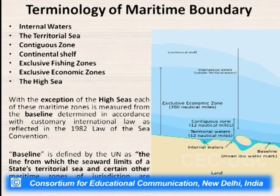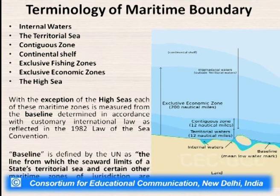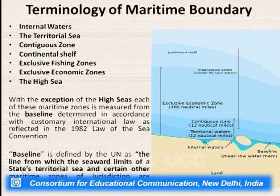The different terminologies used by international organizations like UNCLOS include: internal waters, the territorial sea, the contiguous zone, the continental shelf, the exclusive economic zone, the exclusive fishing zone, and the high seas. Starting from the land mass of any country towards the sea, we can divide and see the jurisdiction or measurement of all these zones. All these zones start counting from the baseline, and each maritime zone is measured from the baseline according to the UN Convention on the Law of the Sea of 1982.